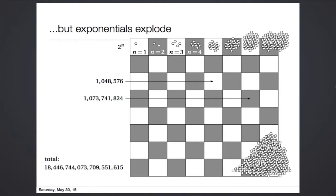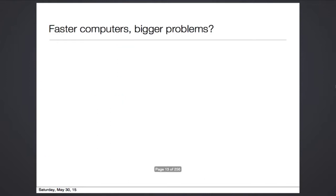You might also wonder, what happens when computers get faster every year? Can't we solve bigger problems then? It turns out that the growth rate, exponential or polynomial, affects this as well.